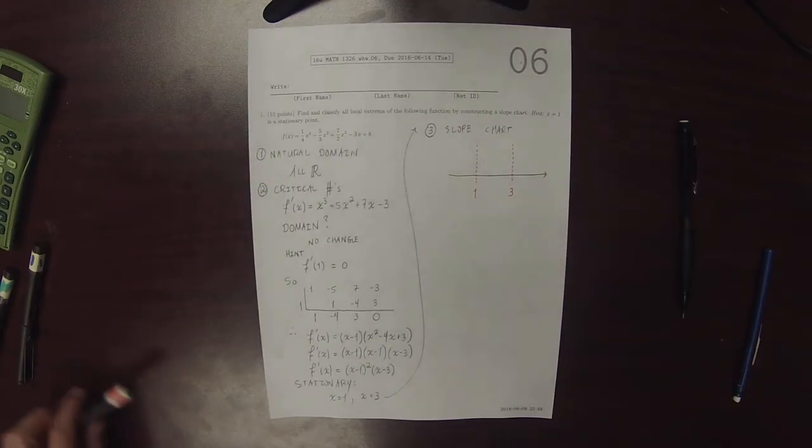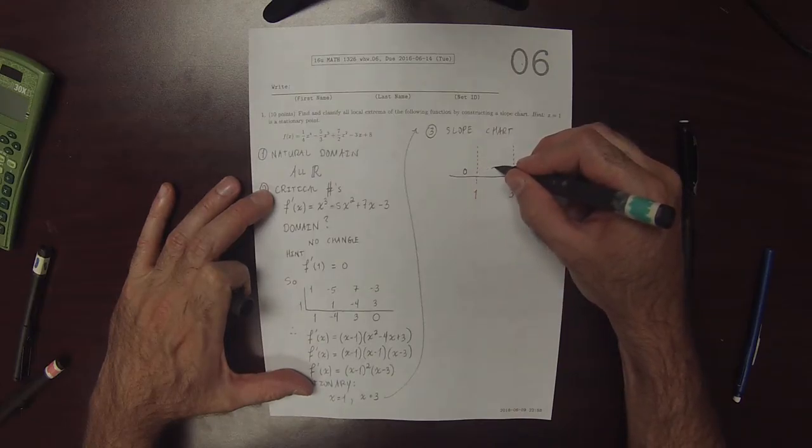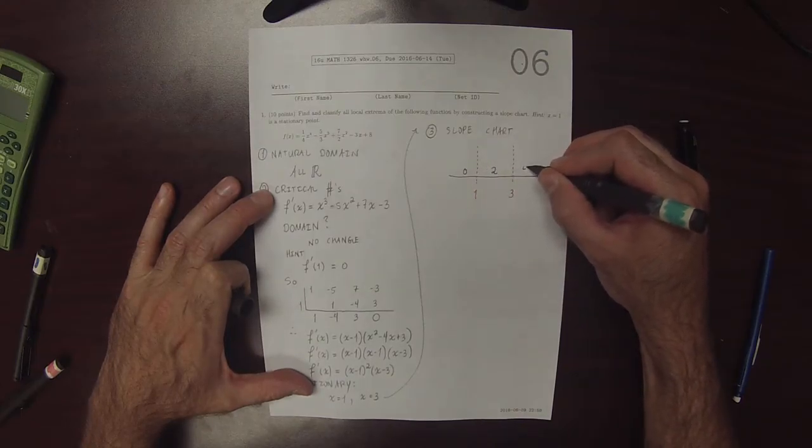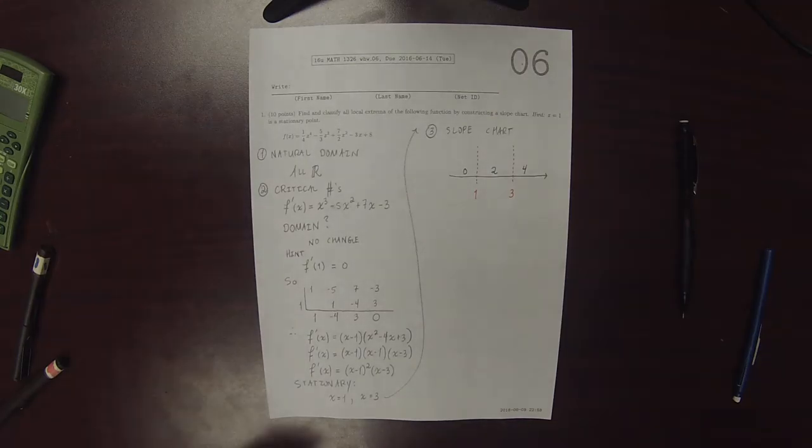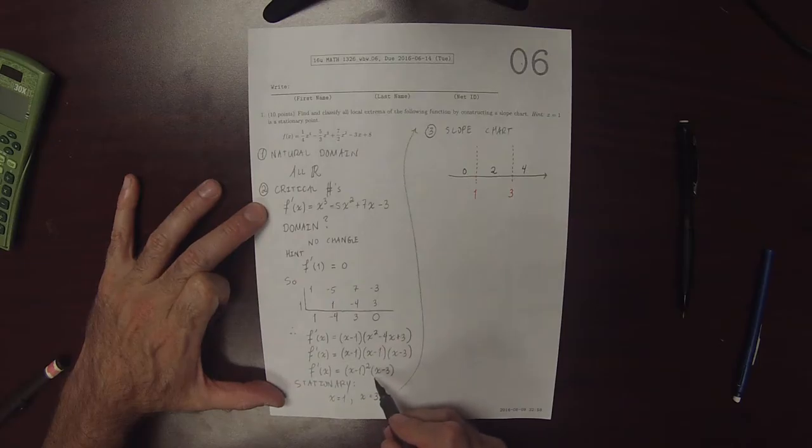And now in each region, we need to select a test point. So how about 0, 2, and 4. And then we need to evaluate the derivative at each test point. So we'll evaluate this factored version of the derivative.